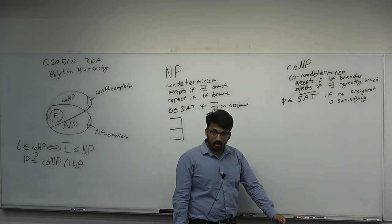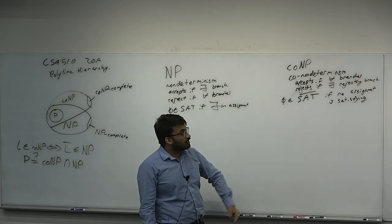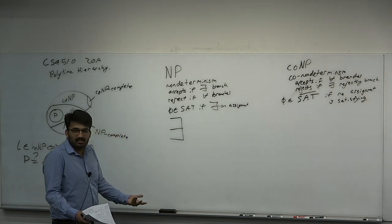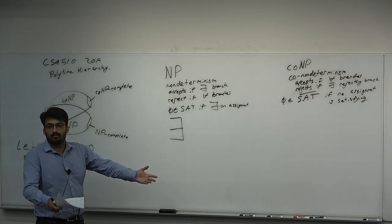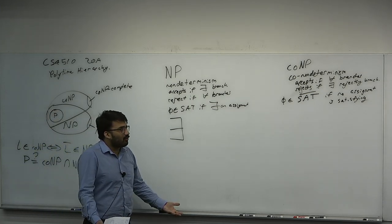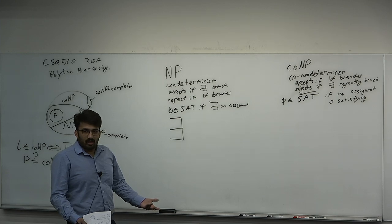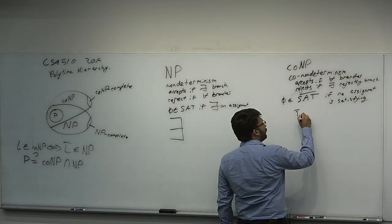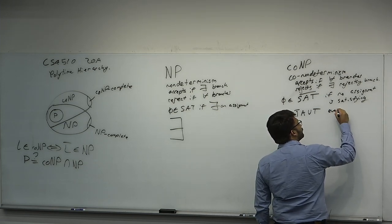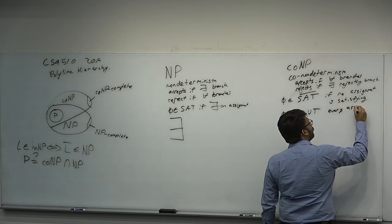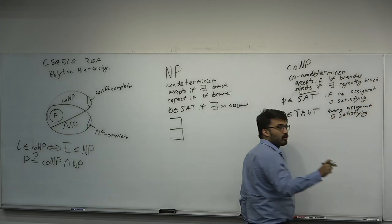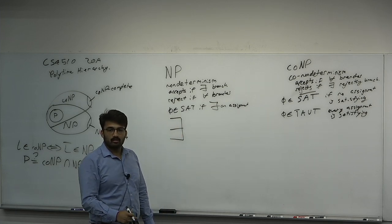If you think of the truth table — which is exponentially sized — asking about SAT is asking: does there exist a one anywhere in that truth table? You can verify that efficiently. But if no assignment is satisfying, the entire last column of the truth table has two-to-the-n zeros. You can't efficiently verify SAT-complement. You can prove a formula is satisfying by giving the satisfying assignment, but how do you prove to someone that all assignments are unsatisfying? You can't really do that.